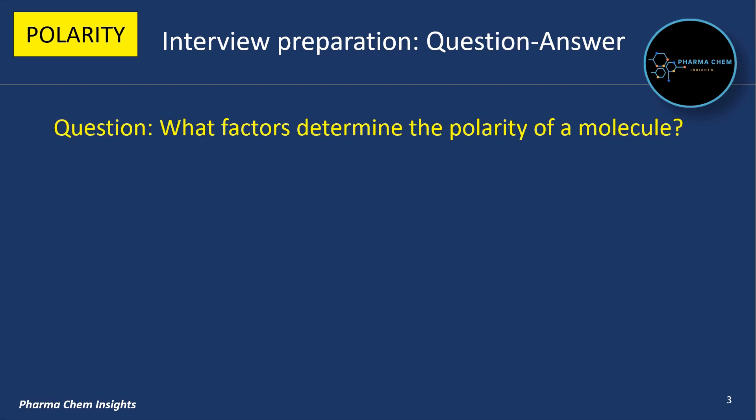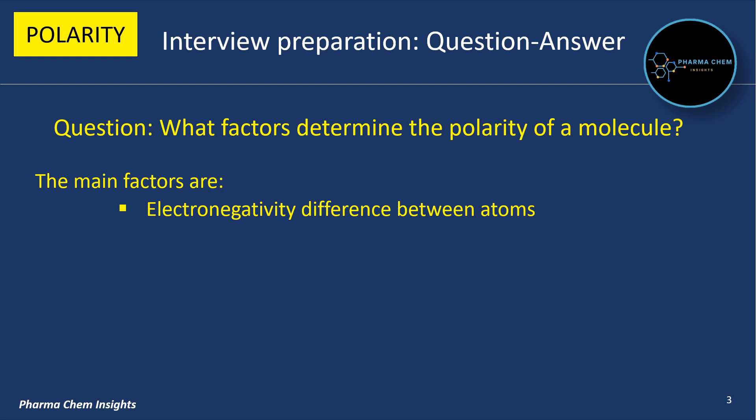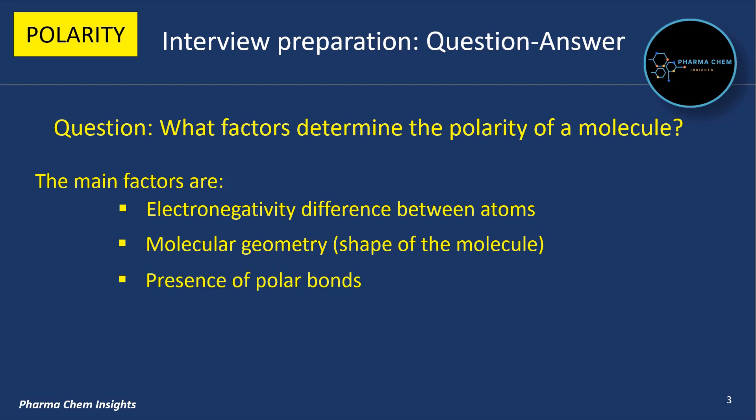Next question: what factors determine the polarity of a molecule? The factors that determine the polarity of a molecule are: first, electronegativity difference between the two atoms; second, molecular geometry — shape of the molecule; third, presence of polar bonds; fourth, symmetry of the molecule.